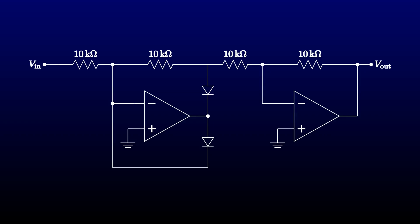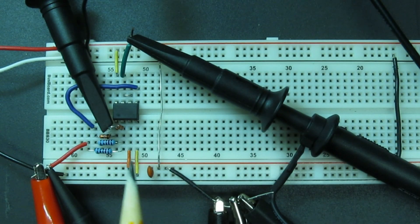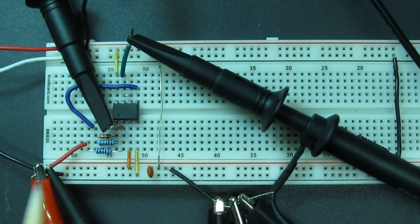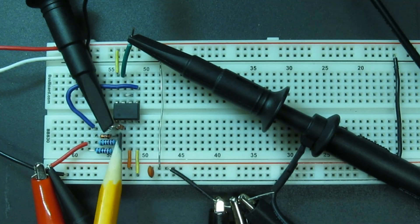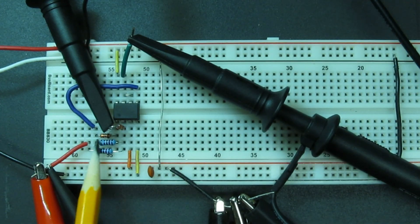Let's go to the breadboard and try out this version. Here I've made the necessary circuit changes, with a diode directly from the op-amp output back to the input, and a diode in the opposite direction to the 10k feedback resistor.